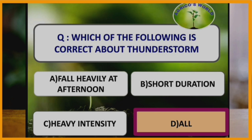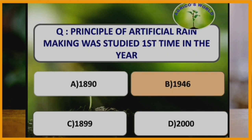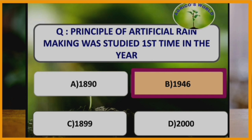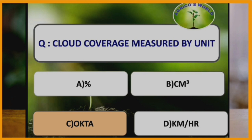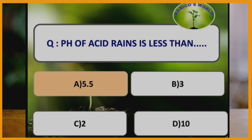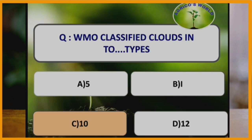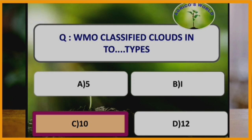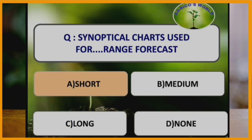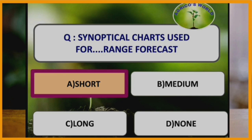Thunderstorms have short duration and heavy intensity. The principle of artificial rain making was first studied in 1946. Cloud coverage is measured by the unit okta. The pH of acid rain is less than 5.5. Substances used for artificial rain making are dry ice, sodium chloride, and copper sulphate. The World Meteorological Organization classified clouds into 10 types. Synoptic charts are used for short-range weather forecasting.